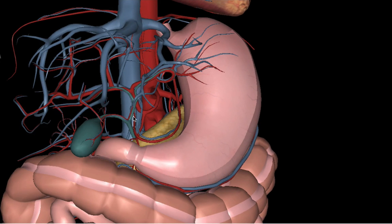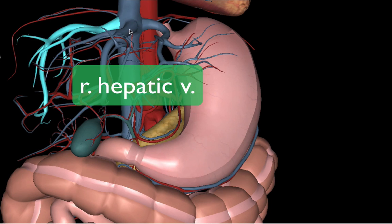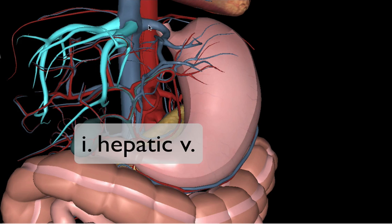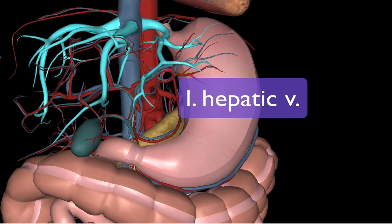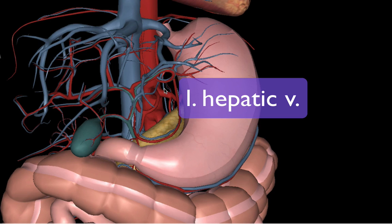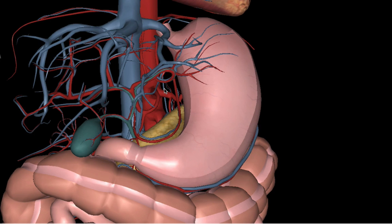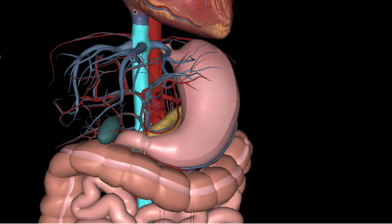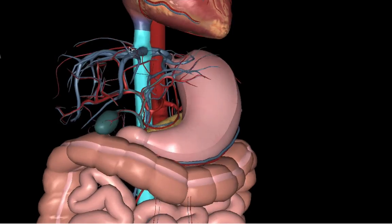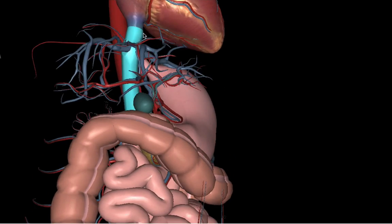There are four main portal veins we're going to examine. We have the right hepatic vein, the intermediate hepatic vein, and the left hepatic vein. Blood drains from the liver into these veins, then into the inferior vena cava, which leads directly inferior to the heart into the right atrium.